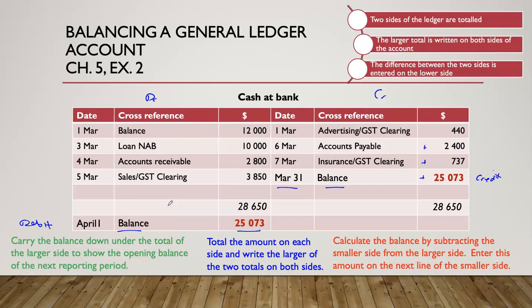To summarise: add up both sides and put the larger total on both sides. Above the smaller side, enter the difference between the larger and smaller sides, dating it the last day of the month, with cross-reference 'balance.' Then below the totals on the other side, on the first day of the next month, enter the same amount with cross-reference 'balance.' This is your opening balance for the new period — for example, we started with $12,000 on the first of March.